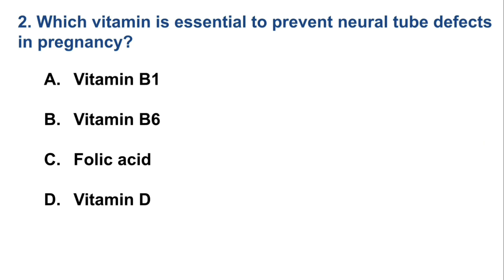Which vitamin is essential to prevent neural tube defects in pregnancy? Option A: Vitamin B1, Option B: Vitamin B6, Option C: Folic Acid, Option D: Vitamin D. The correct option is Option C, Folic Acid.